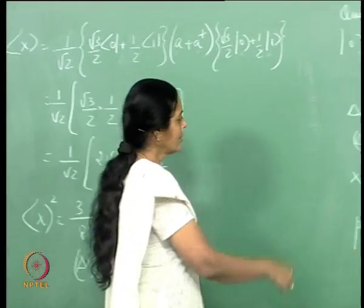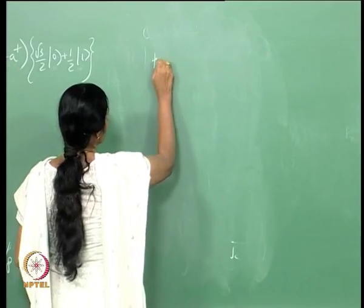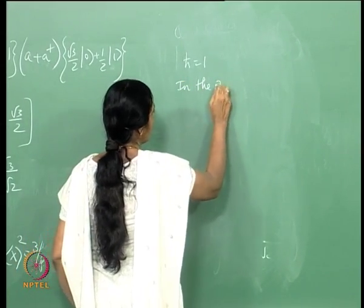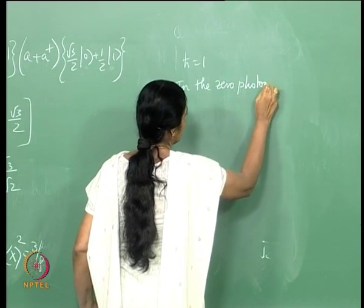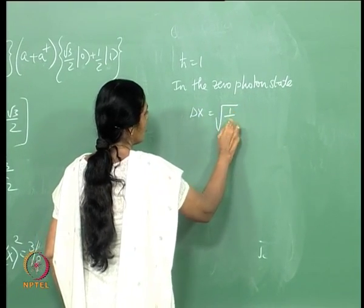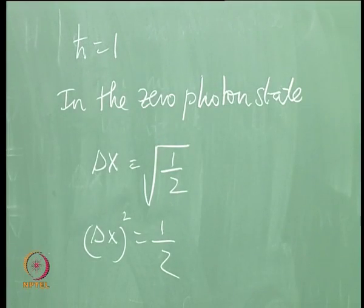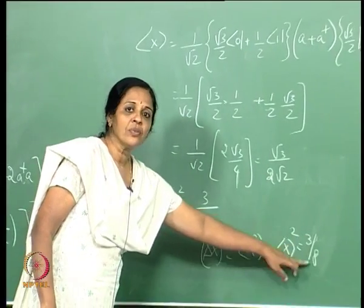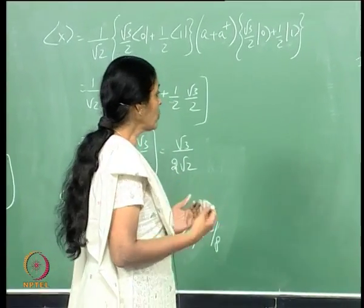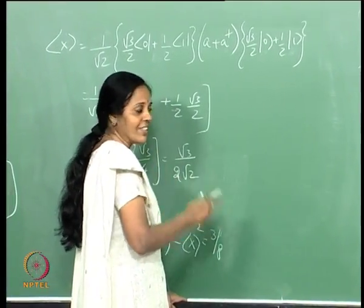In the ground state, with h-cross equal to 1, delta x squared equals 1/2. Here I have a state where the variance is 3/8, which is less than 1/2. So this state is squeezed in the x quadrature. I should check that it is not squeezed in the p quadrature, because that would violate the uncertainty principle. So let us work out delta p squared.